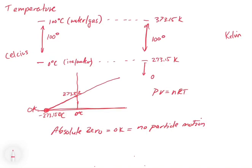This is a theoretical limit, and it can't be reached because of certain quantum restrictions. But anyway, that's another story. So there's no particle motion at zero Kelvin. So it's a theoretical limit. You can approach it, but you should never be able to get there.